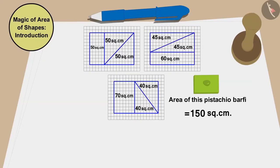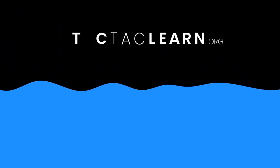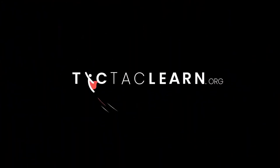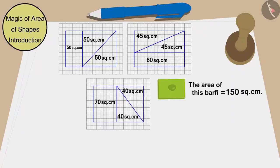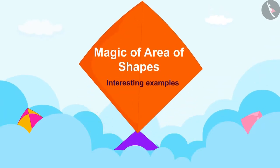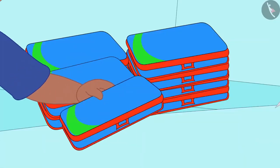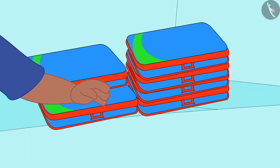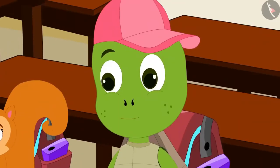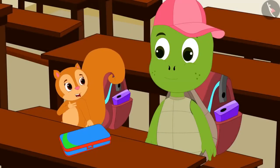Children, in this video we saw some unique examples of finding areas of shapes. In this video, we will see some more interesting examples. At Raju's birthday party, Raju gave compass boxes of the same design to all the children. The next day, Pinky, Chanda and Tufan get excited and bring their new compass box to school.